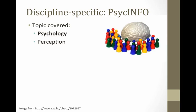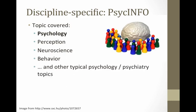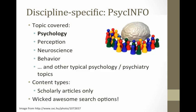PsychInfo includes psychology, also things like perception, neuroscience, and behavior — how we perceive information, how we perceive color, how we perceive messages, be they advertising messages or journalism messages. It also includes other psychology topics, and it is pretty much only scholarly articles. It's one of my favorite databases — it's got wicked awesome search options and a lot of really fun stuff you can do. If you find yourself needing to search any of these topics, let me know and I can show you how to really kick the tires on them.